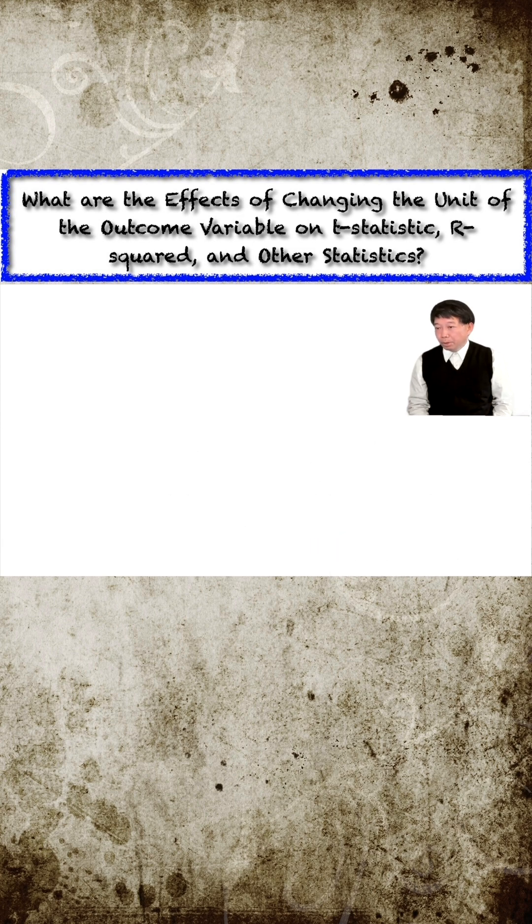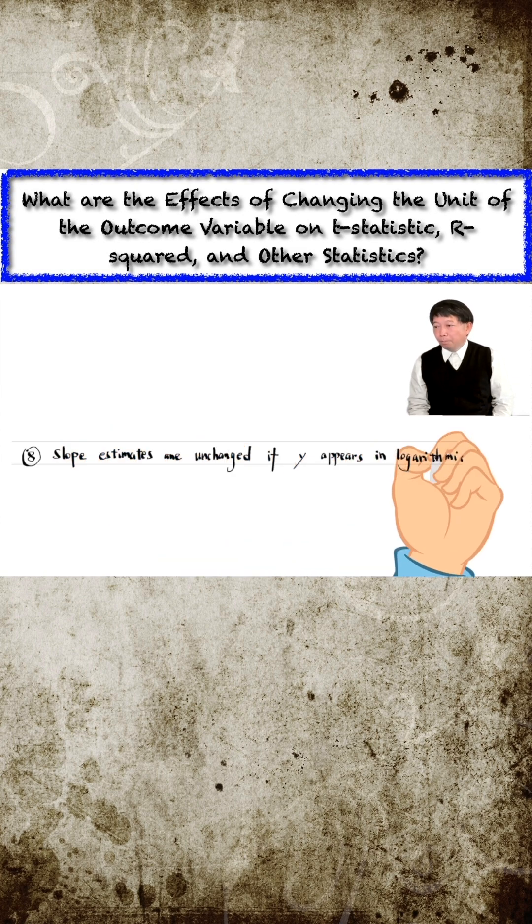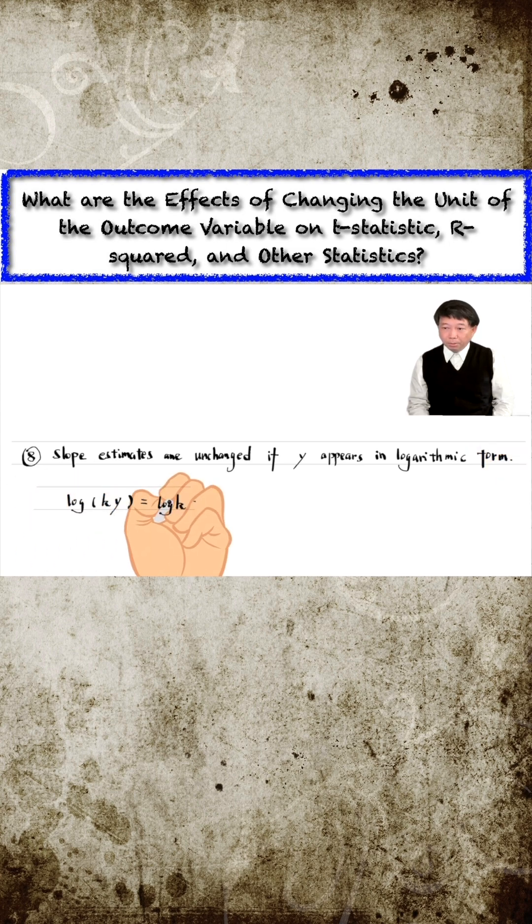The last observation is about the slope estimates when y is in logarithmic form. When the outcome variable is scaled by k, we can write out the log form in two terms. The log k will be incorporated into the new intercept, while the slope estimates will remain unchanged.